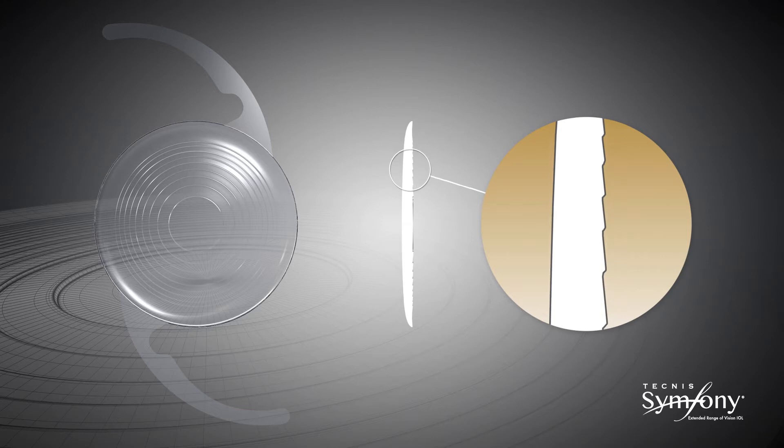The echelette is the relief or profile of the lens, meaning its height and shape within each ring. The design of the echelette determines how the light is transmitted through the lens.